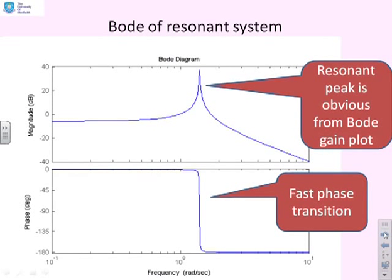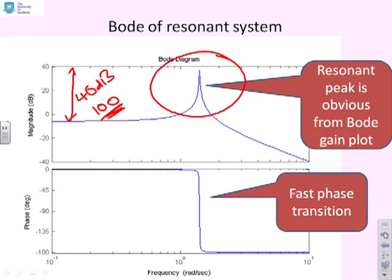Here's an archetypal resonance plot. If you see a plot like this, the peak in the gain plot jumps out at you. I've exaggerated this one. The peak is about 40 decibels bigger than the steady state, which means a multiplying factor of about 100. The phase transition from 0 to minus 180 is very fast. This is a system with almost no damping at all. The resonance peak jumps out at you when you look at this Bode diagram.